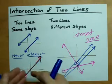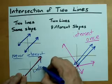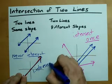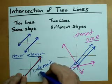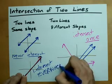If the y-intercepts are also the same, then it's not a case of they don't intersect. It's a case of they intersect everywhere. And by everywhere, I mean everywhere on the line.